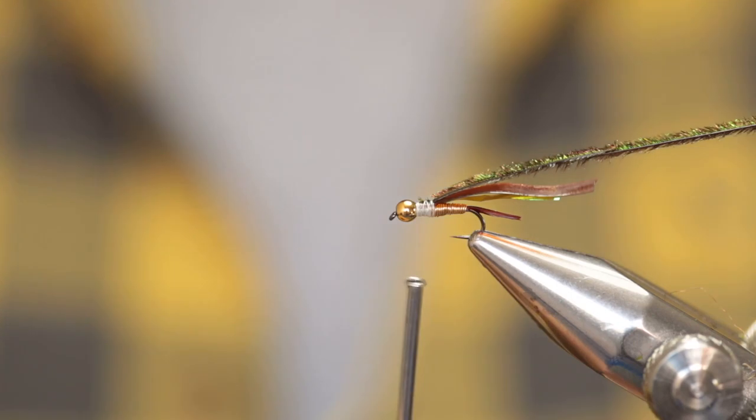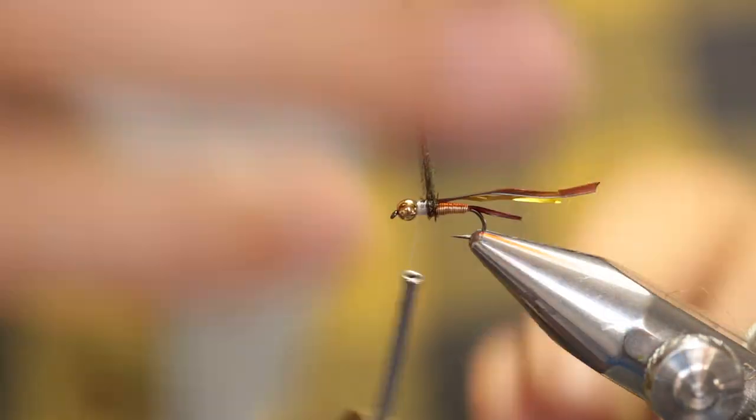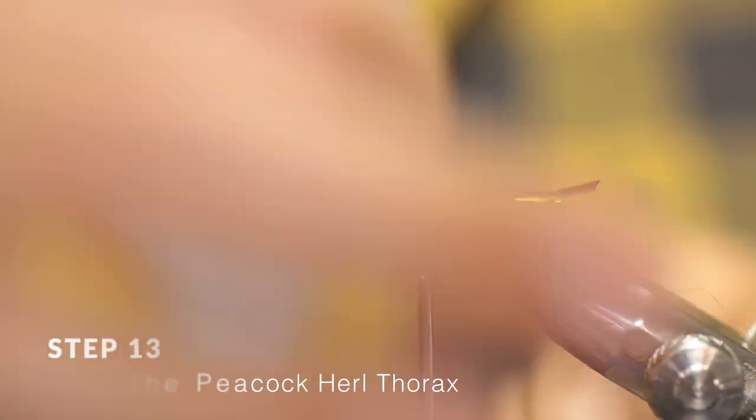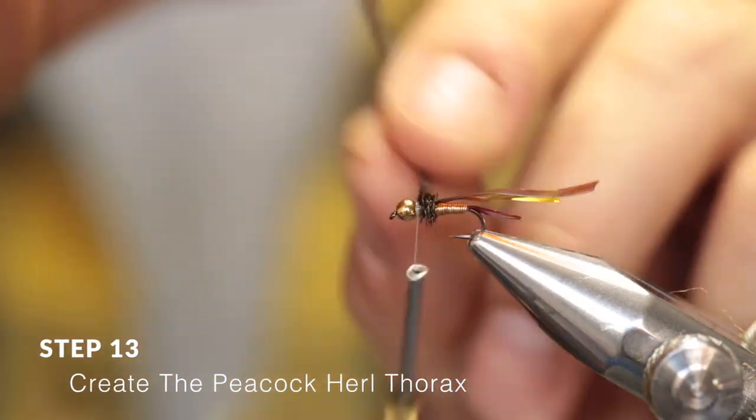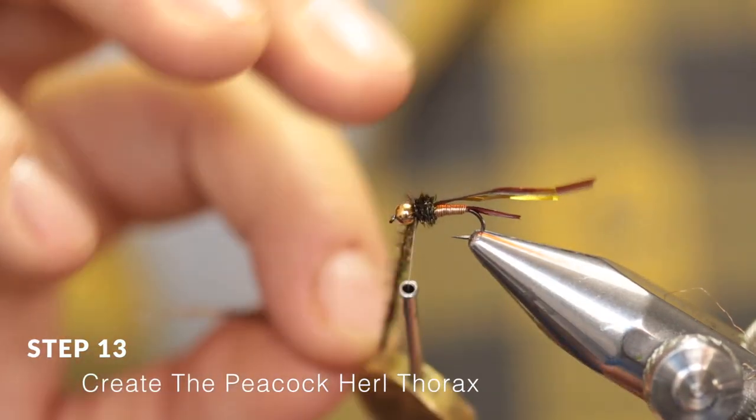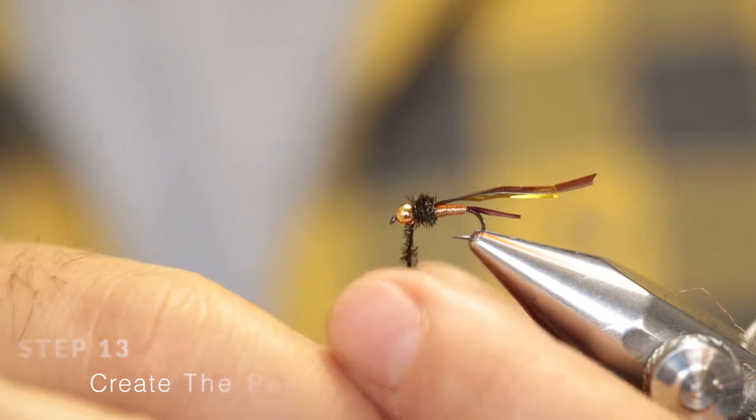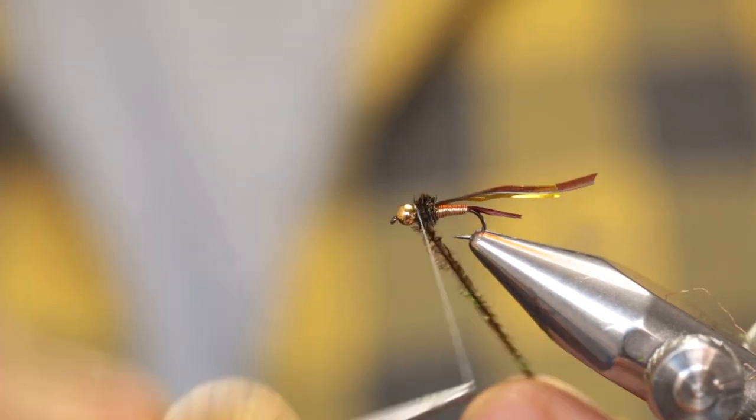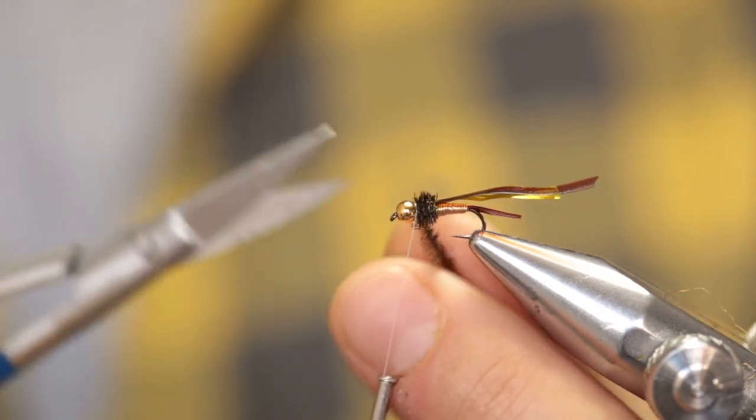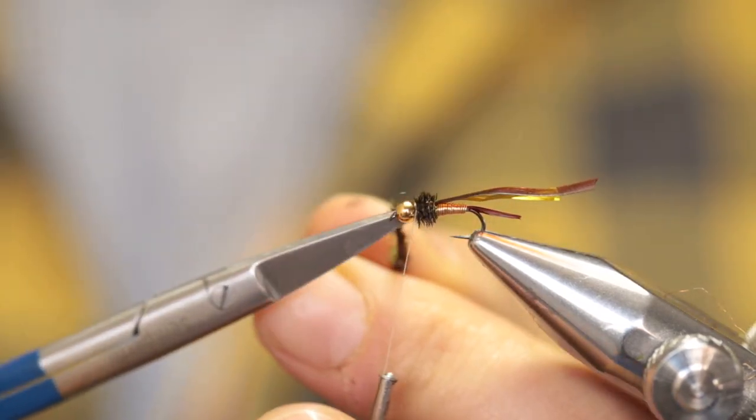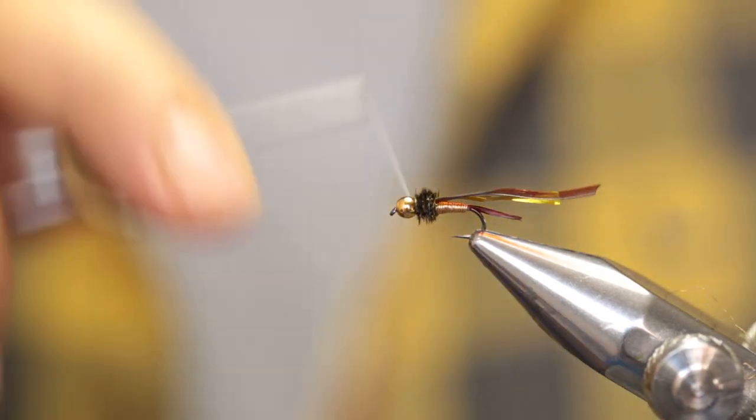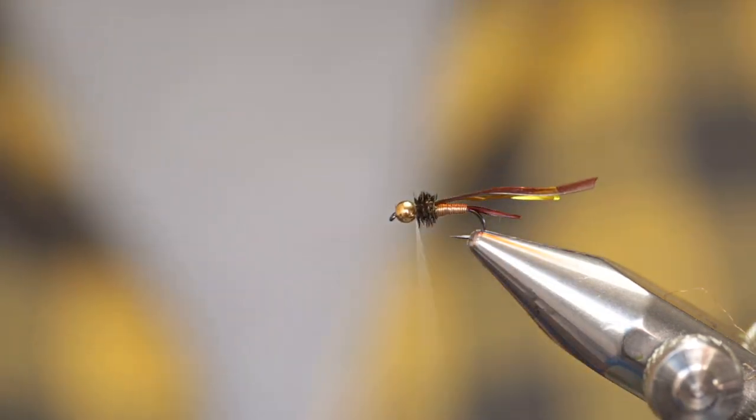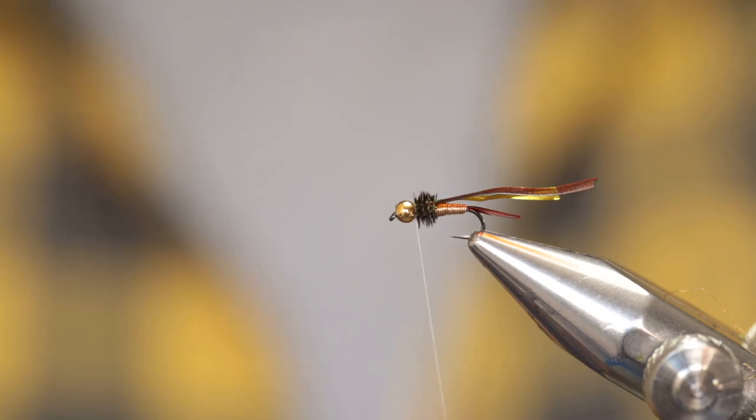Wrap your thread forward and very gently, with touching turns, wrap your peacock herl thorax forward. Once you reach your thread, tie it off and cut off any excess, being careful of your thread. Make one more wrap to secure it.